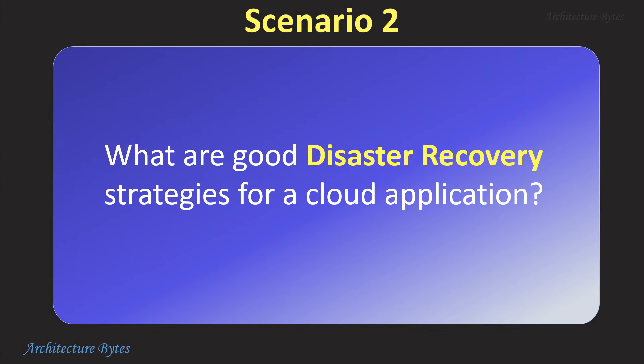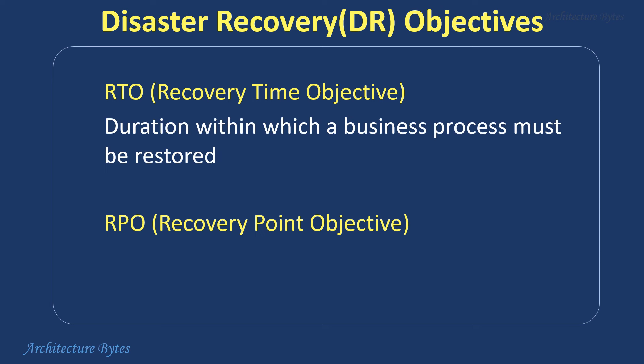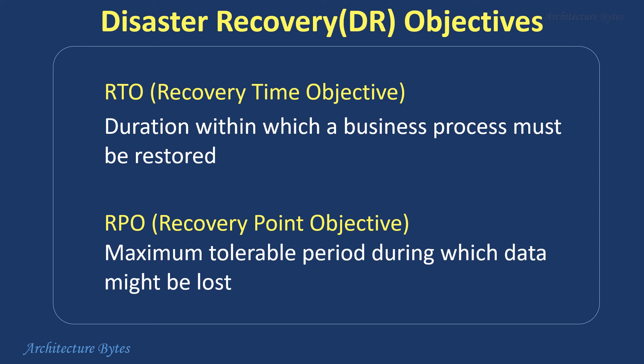What are good disaster recovery strategies for a cloud application? Our disaster recovery strategy should be based on RTO and RPO. RTO, or recovery time objective, is the duration within which a business process must be restored. RPO, or recovery point objective, is the maximum tolerable period during which data might be lost.